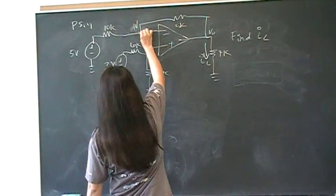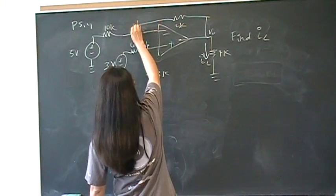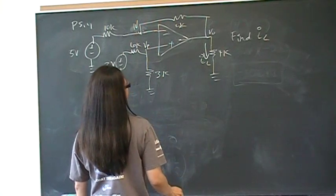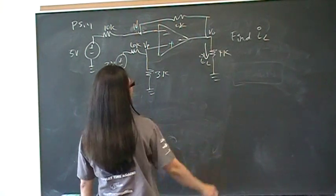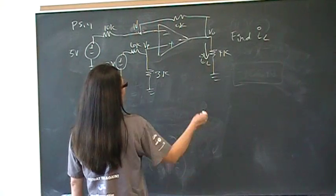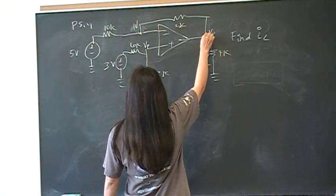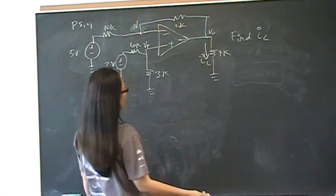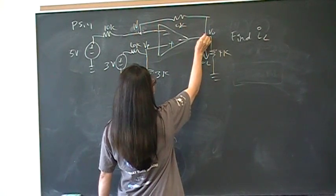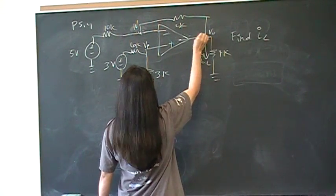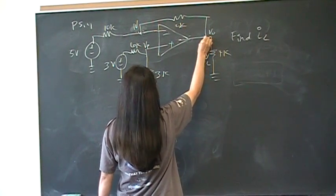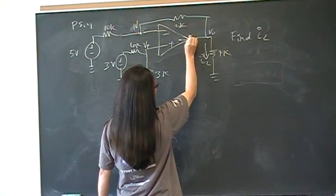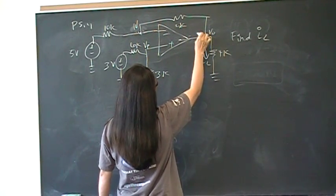We have to resist the temptation to say: okay, I could just do (Vout minus feedback resistor) plus Vout over 4k equals 0, and then solve for Vout that way. That wouldn't be a true statement — it doesn't work because there is a current going in this direction. The true KCL equation here is: (Vout minus 1 volt) over 5k, plus Vout over 1k, plus IX equals 0. Now you have two unknowns and one equation.